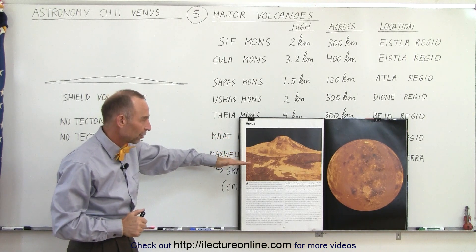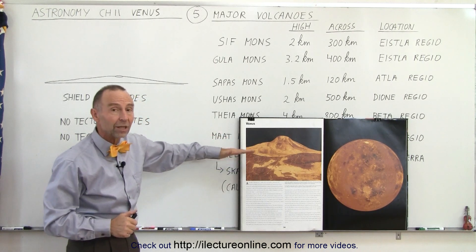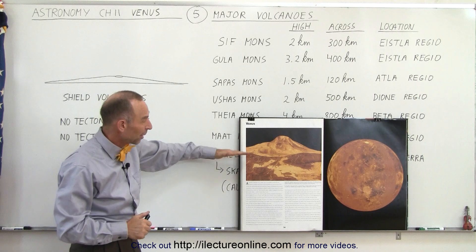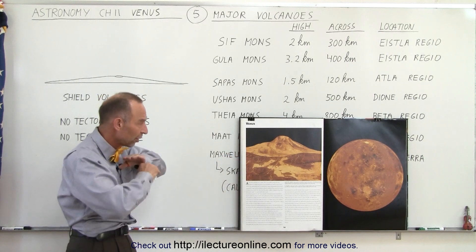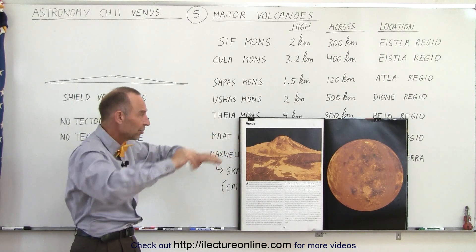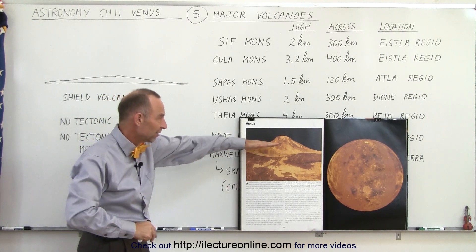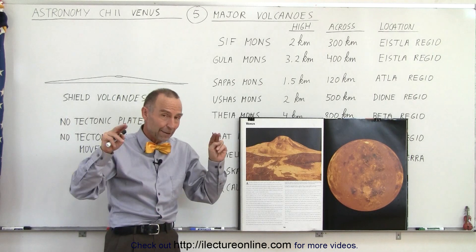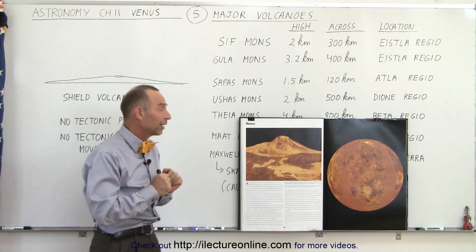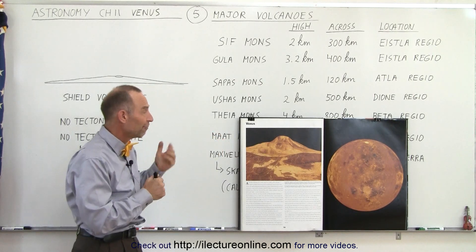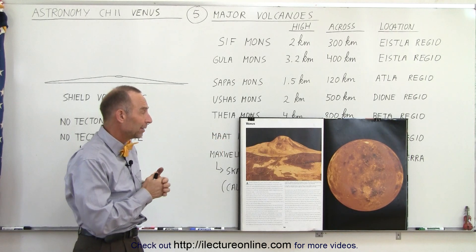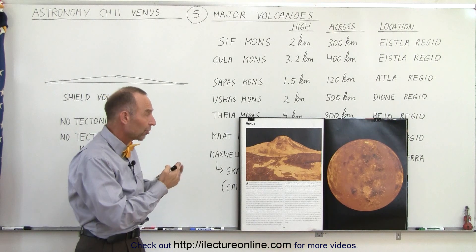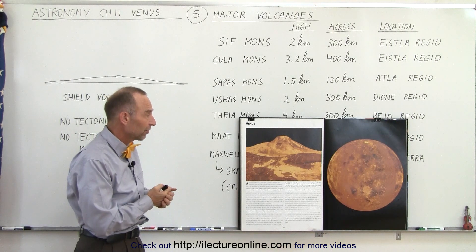The simulation here is that you're about one kilometer — about 0.6 miles — above the surface, looking into the distance, seeing this mountain. This is a radar picture of Maat Mons, and it's one of the taller mountains on the surface of the planet.